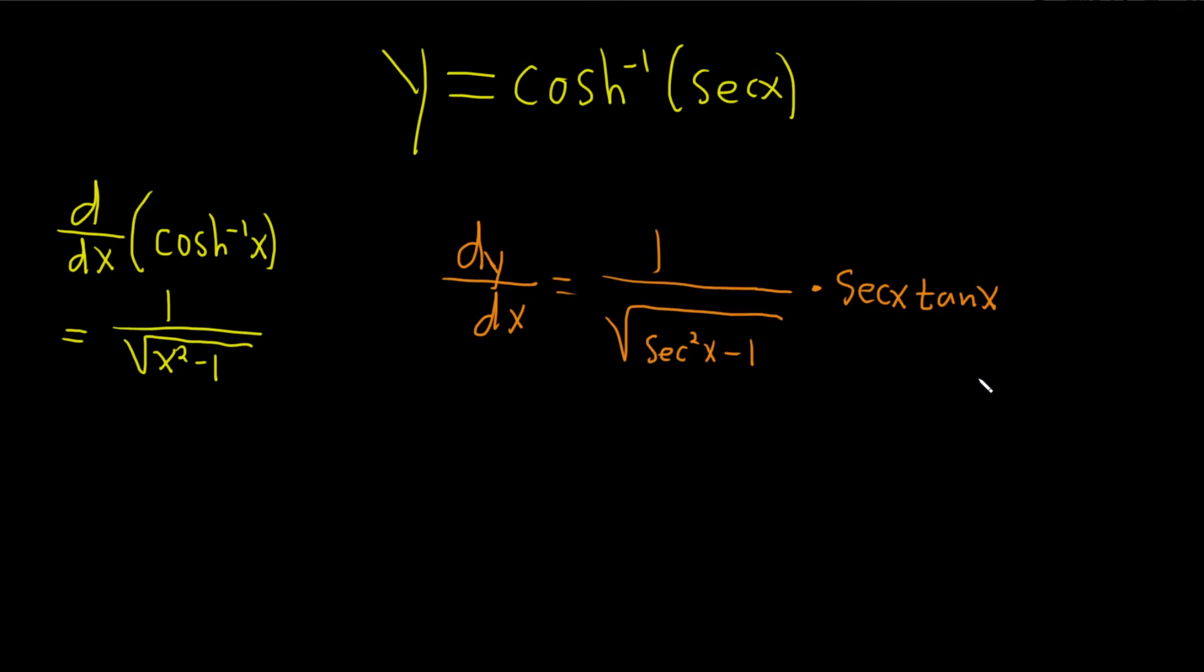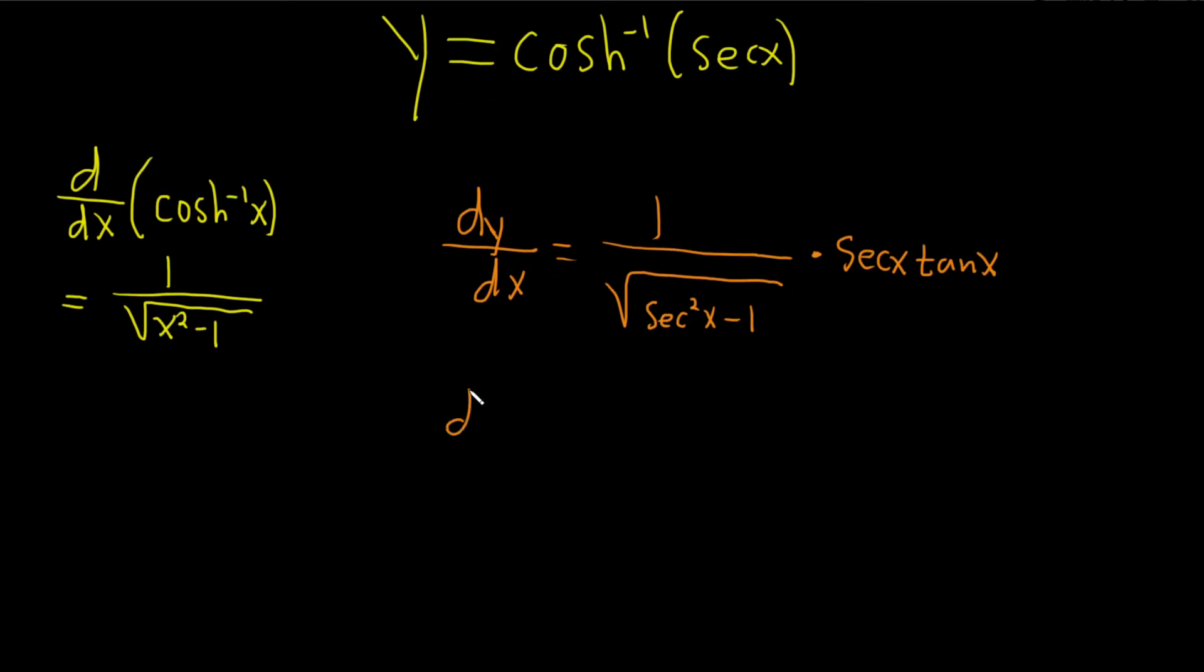All right, let's keep going. So this is dy dx equals, so we have secant x tangent x over, and then secant squared minus 1, so what is that? We know that 1 plus tangent squared is equal to secant squared of x.